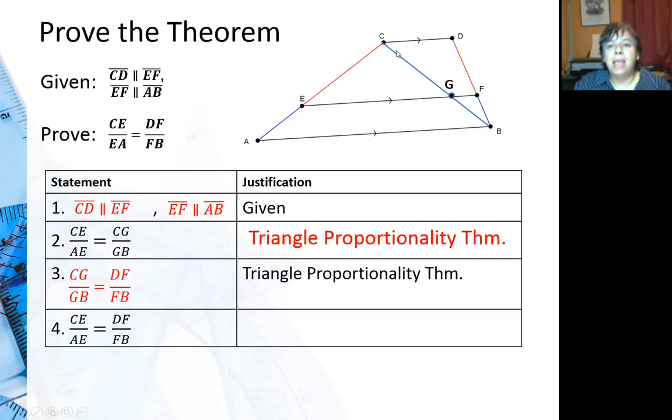If CE is to EA as CG is to GB, which is also as DF is to FB, using the transitive property, I can say that this red is to the blue as the red is to the blue.